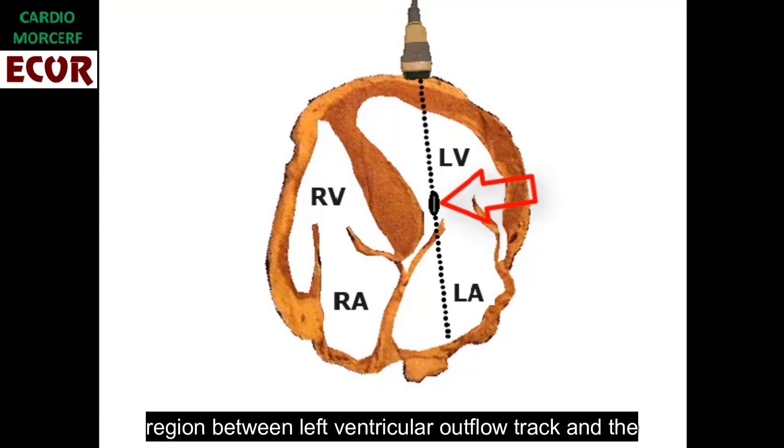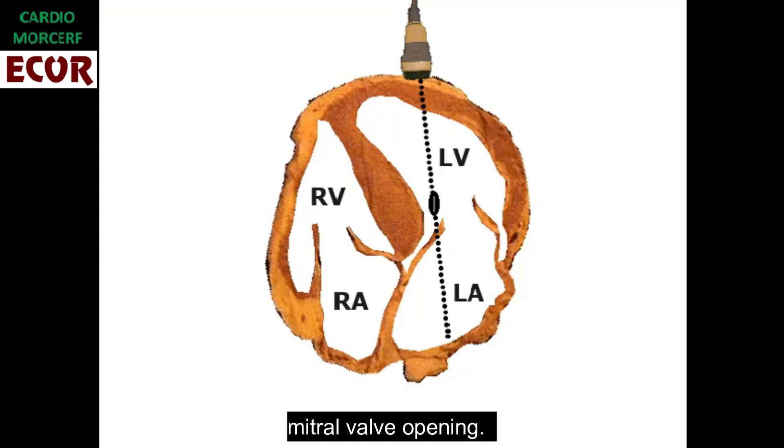This period can be easily measured by Doppler when we set the pulse-wave sample volume in an intermediate region between the left ventricular outflow tract and the mitral valve opening.